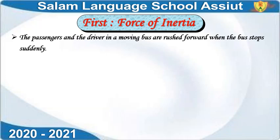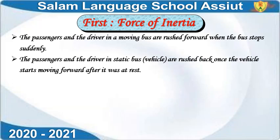The passenger and the driver in a moving bus are rushed forward when the bus stops suddenly. The passenger and the driver in a static bus are rushed backward once the bus starts moving forward.